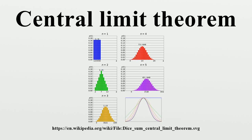Central limit theorems for independent sequences. Classical CLT: Let x1, ..., xn be a random sample of size n — that is, a sequence of independent and identically distributed random variables drawn from distributions of expected values given by μ and finite variances given by σ². Suppose we are interested in the sample average of these random variables.